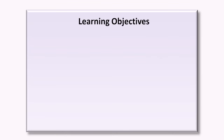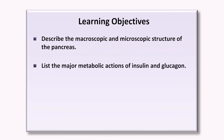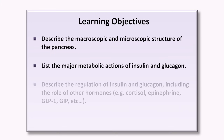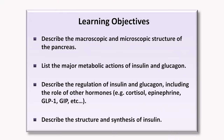By the end of this video, you'll be able to describe the macroscopic and microscopic structure of the pancreas, list the major metabolic actions of insulin and glucagon, describe the regulation of insulin and glucagon including the role of other hormones such as cortisol, epinephrine, GLP-1, and GIP among others, and describe the structure and synthesis of insulin.